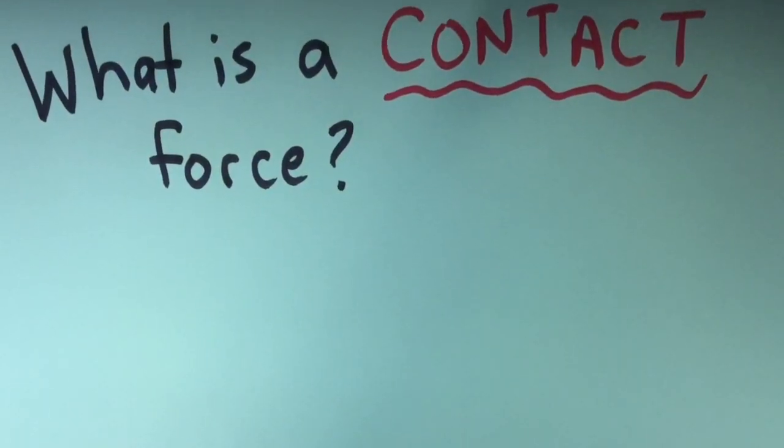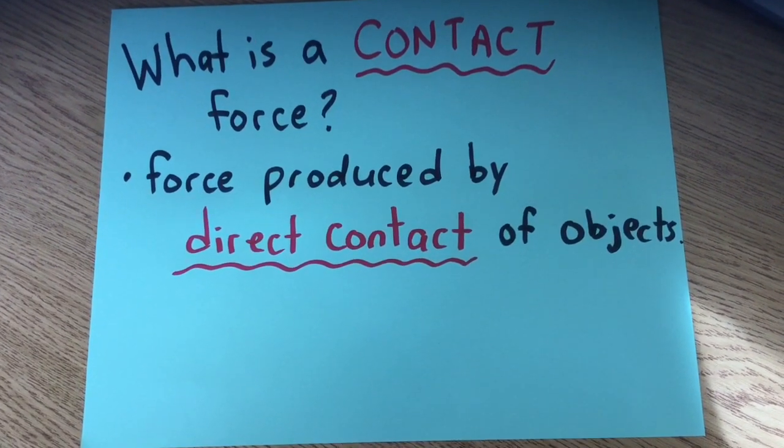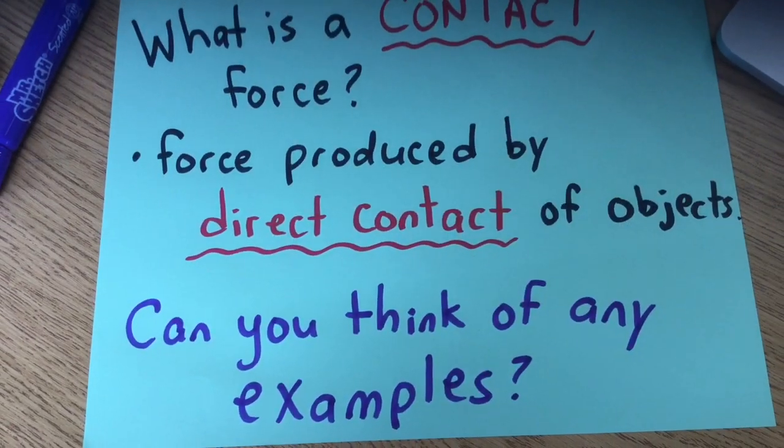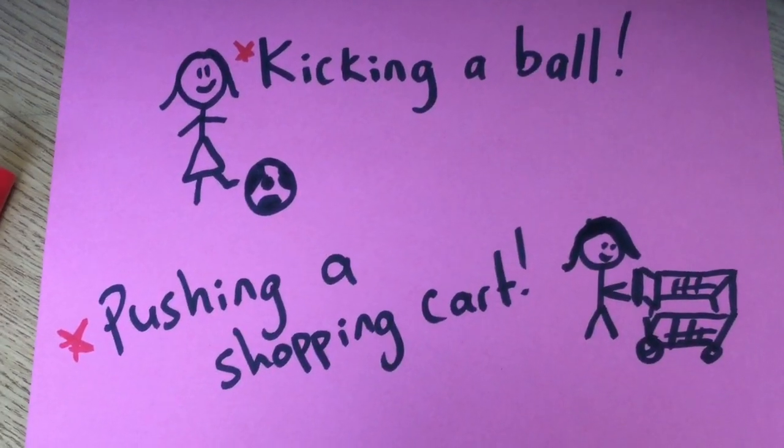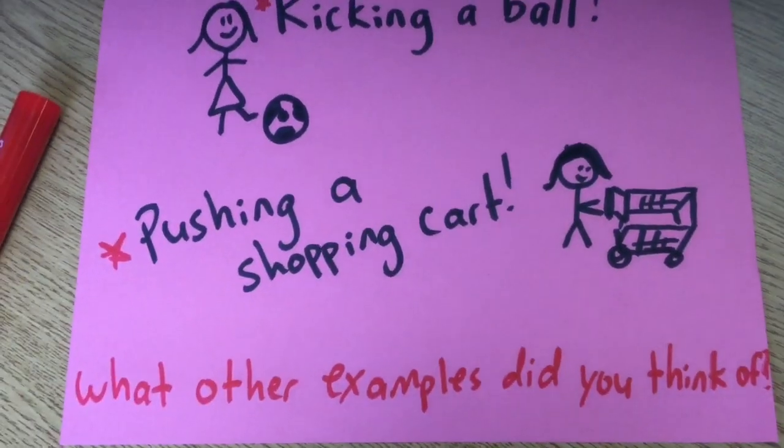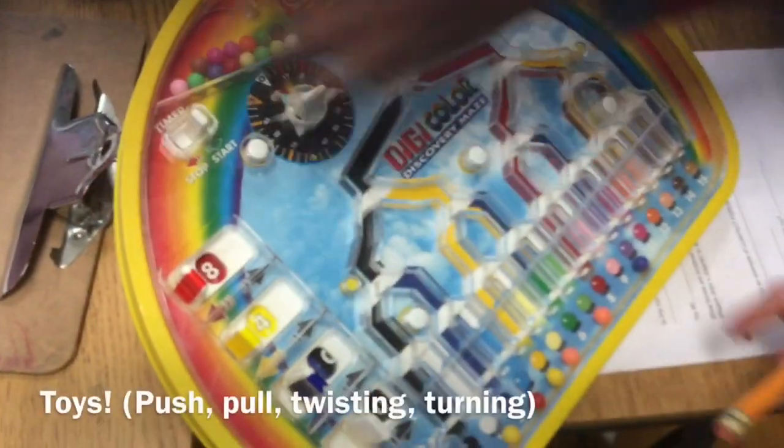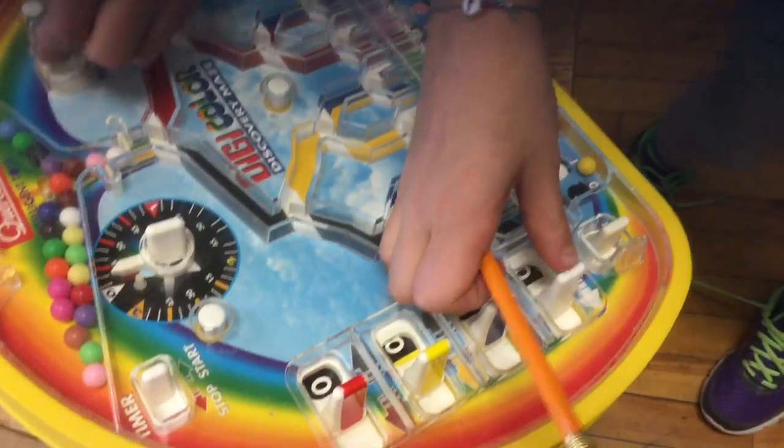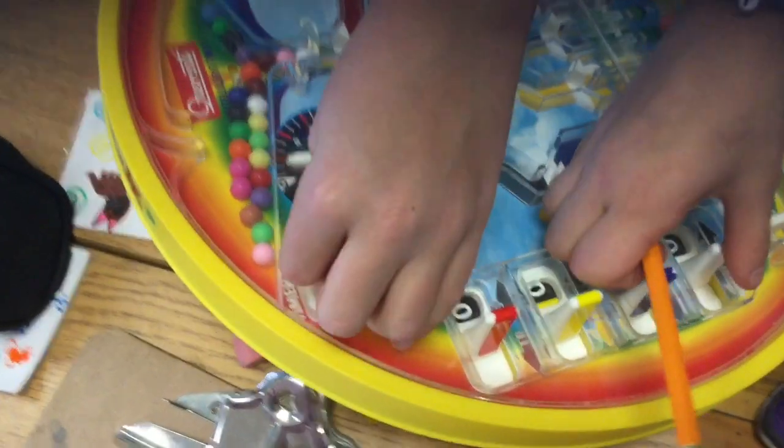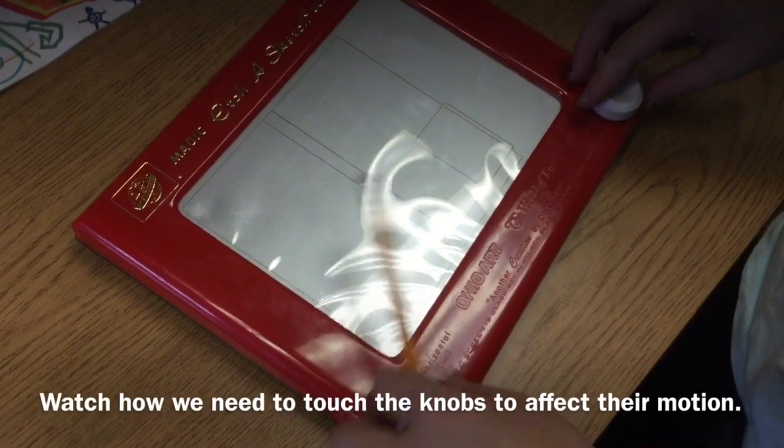So what is a contact force? It's a force produced by direct contact of objects. Can you think of any examples? Kicking a ball, pushing a shopping cart. What other examples can you think of? Here's an example of a toy. Look how we're pushing, pulling, and twisting and turning. Watch how we need to touch the knobs in order to affect their motion.